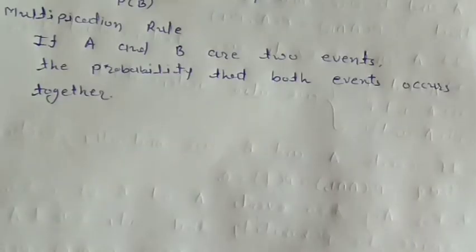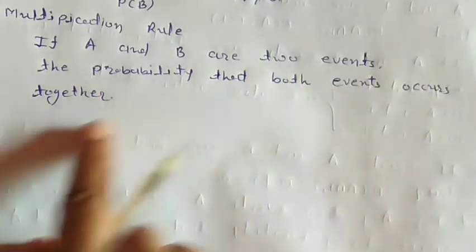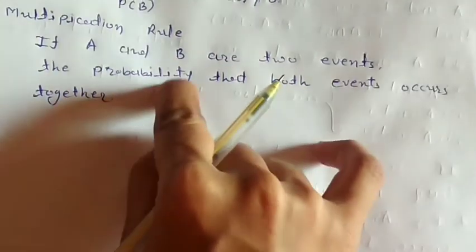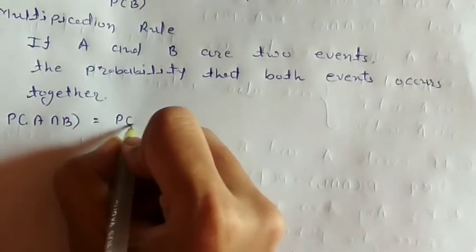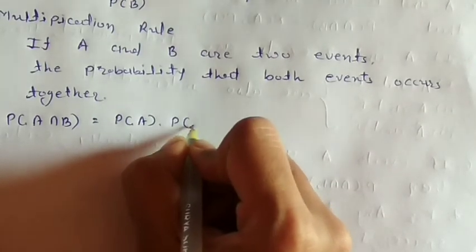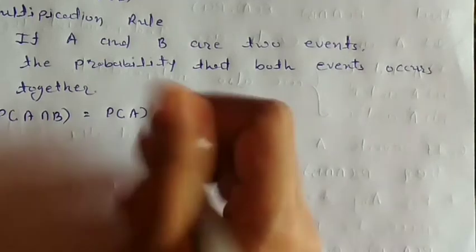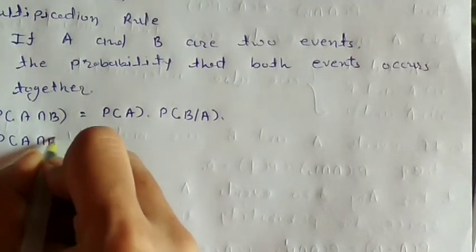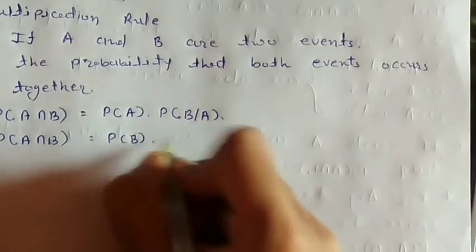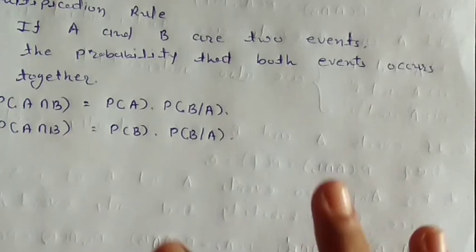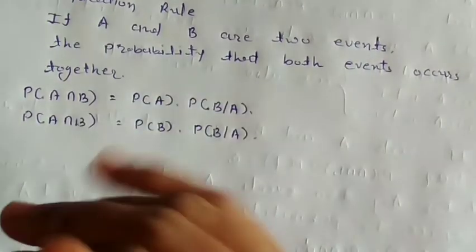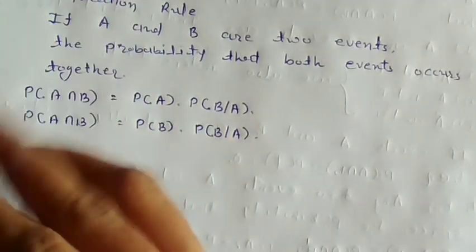Number 13: Multiplication rule. If A and B are two events and both events occur together, then by the multiplication rule: P(A∩B) = P(A) · P(B/A). Alternatively, P(A∩B) = P(B) · P(A/B). These are the 13 important results. You need to use these when solving probability examples.